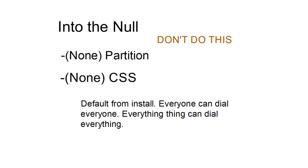Now first things first — the null partition. It's often called the null partition, but it shows up in Call Manager as 'none.' The null partition and the null CSS is what every phone and dialable element is placed in by default from the base CUCM install or config. As far as permissions go, everyone can dial everyone, everyone can dial everything — zero permissions, zero security. You should not do this. You want to make sure everything is out of the null partition. It's the wild west, no control.